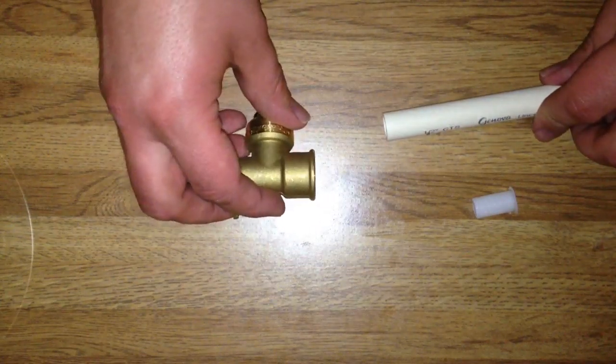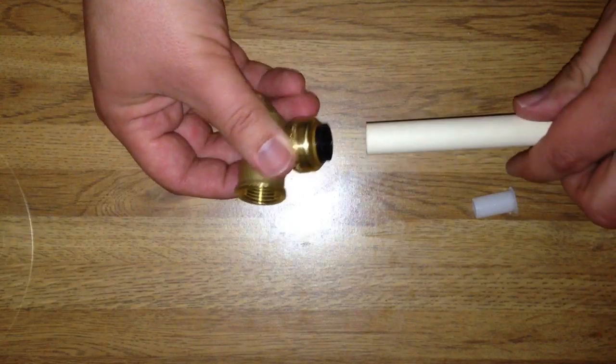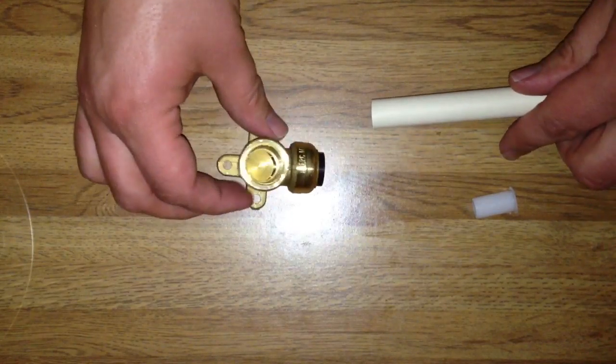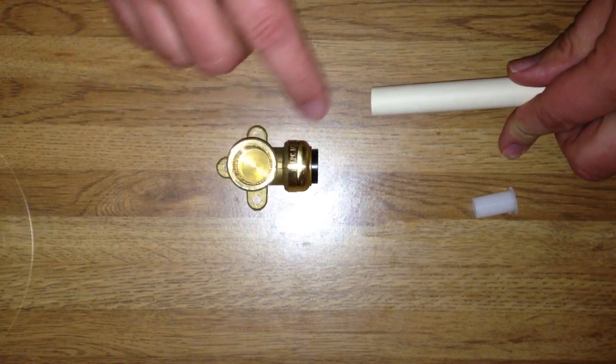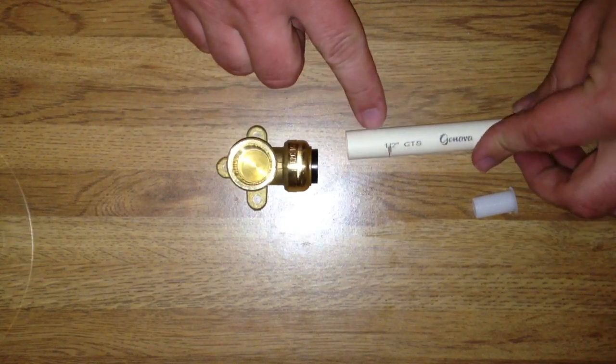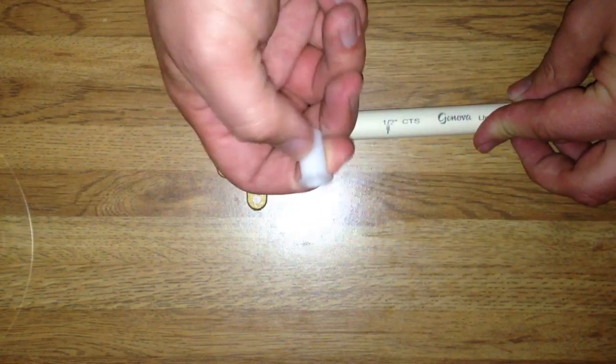I'm showing you how to use a GatorBite fitting. This is threaded on one side. I'm going to use some galvanized here, and I've got some half-inch PVC and the small plastic sleeve.